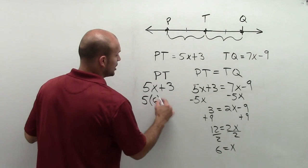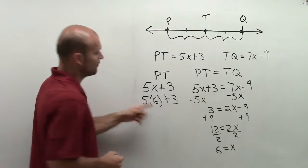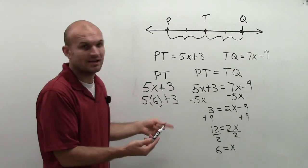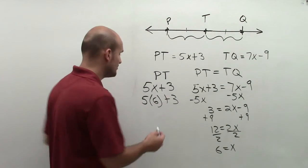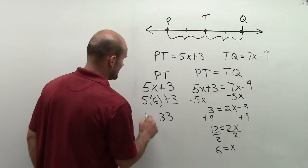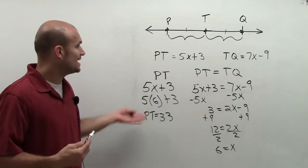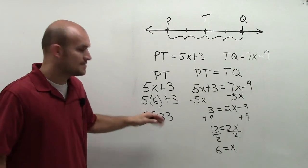So what I'm going to do is I'm going to plug that in for x, and then I just need to evaluate. 5 times 6 is 30, plus 3 is 33. So I can say the length of PT, or the value of the segment PT, is 33.